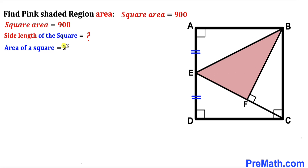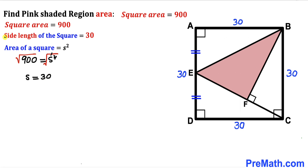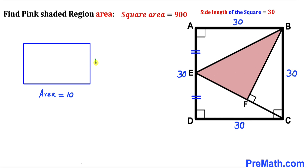The area of a square equals S squared, where S represents the side length. In our case, 900 equals S squared. Taking the square root on both sides, the square and square root undo each other, so side length S equals the square root of 900, which is simply 30. Therefore, the side length of square ABCD is 30 units on all sides.